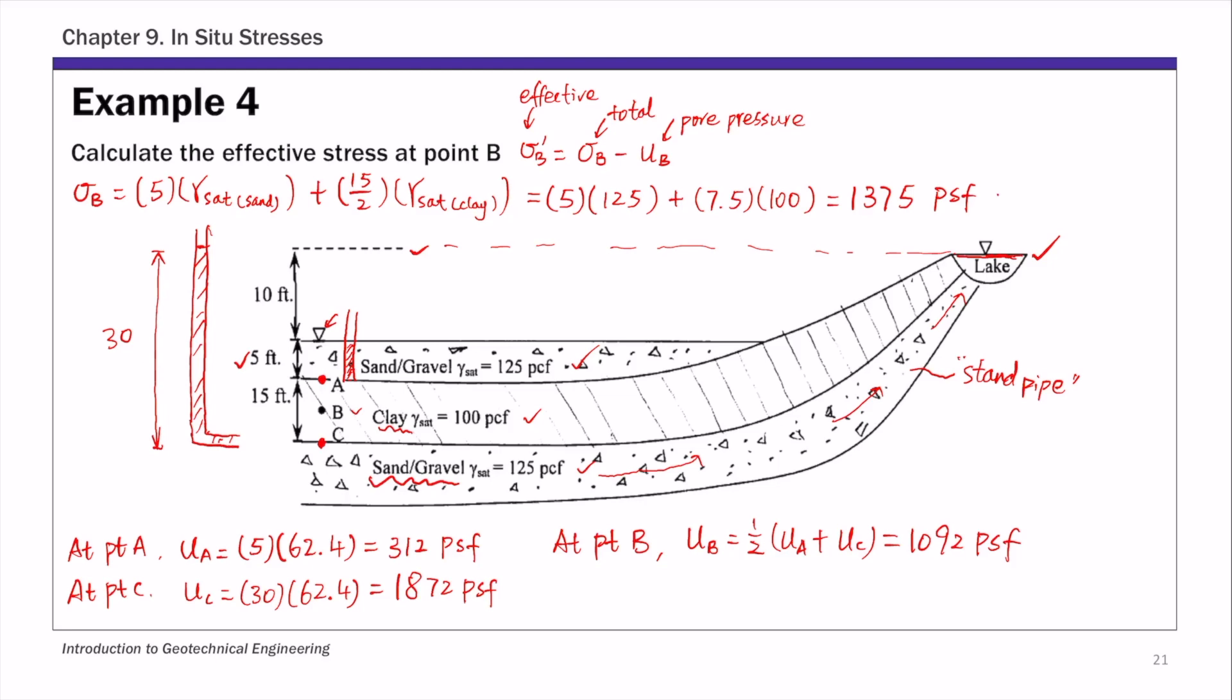Now we have the total stress at B and the pore pressure at B. The effective stress sigma B prime is sigma B minus UB, and that is simply 283 PSF.